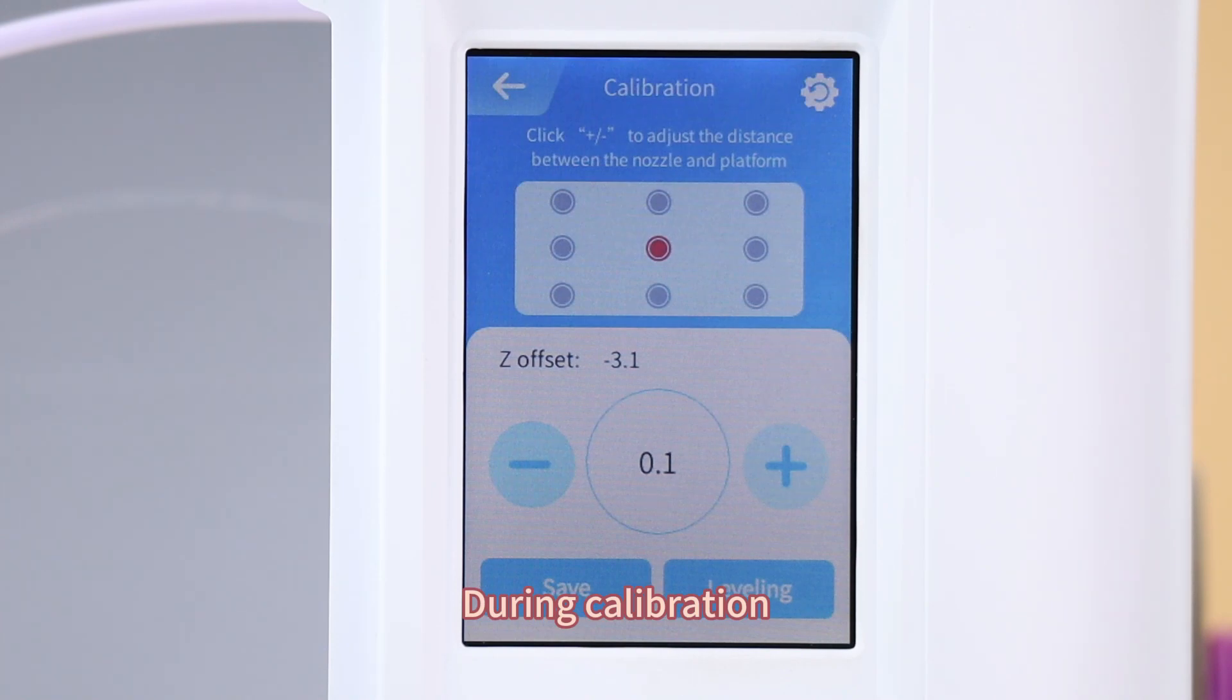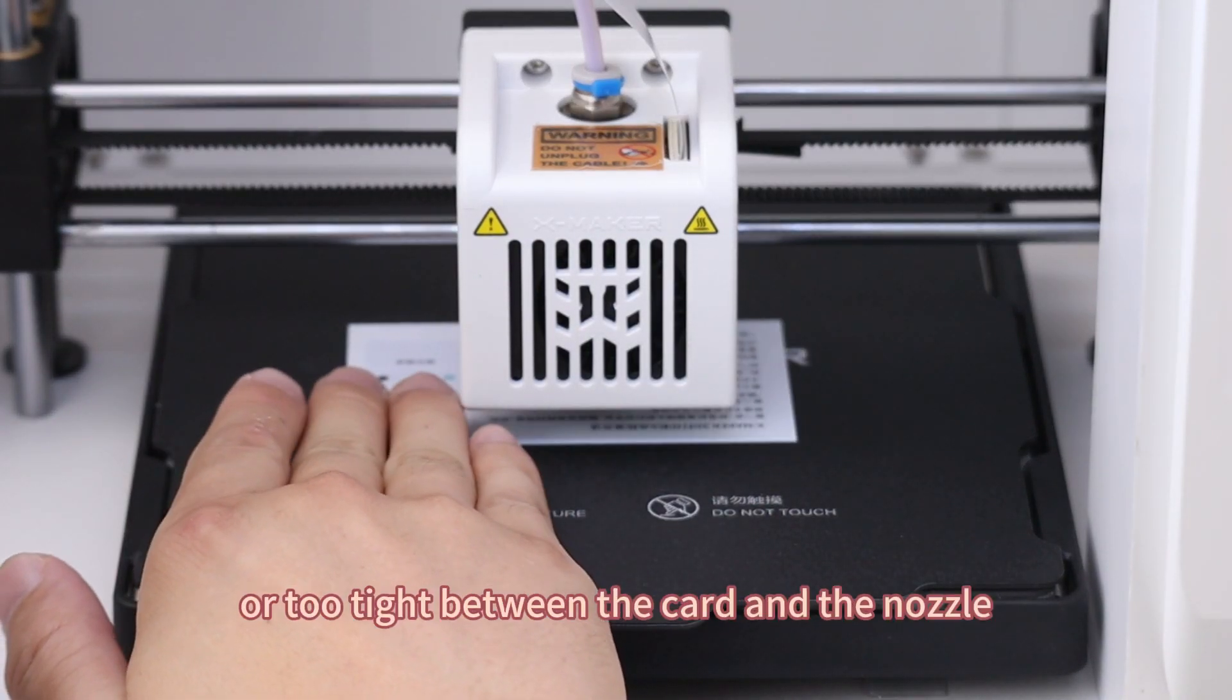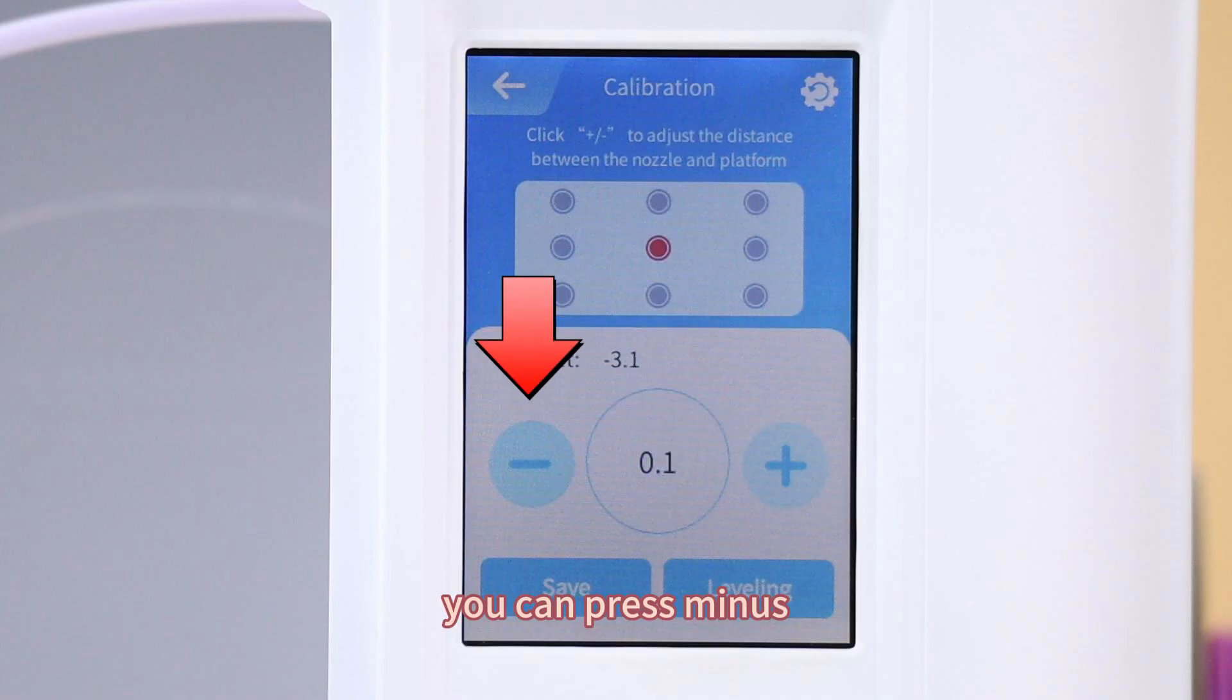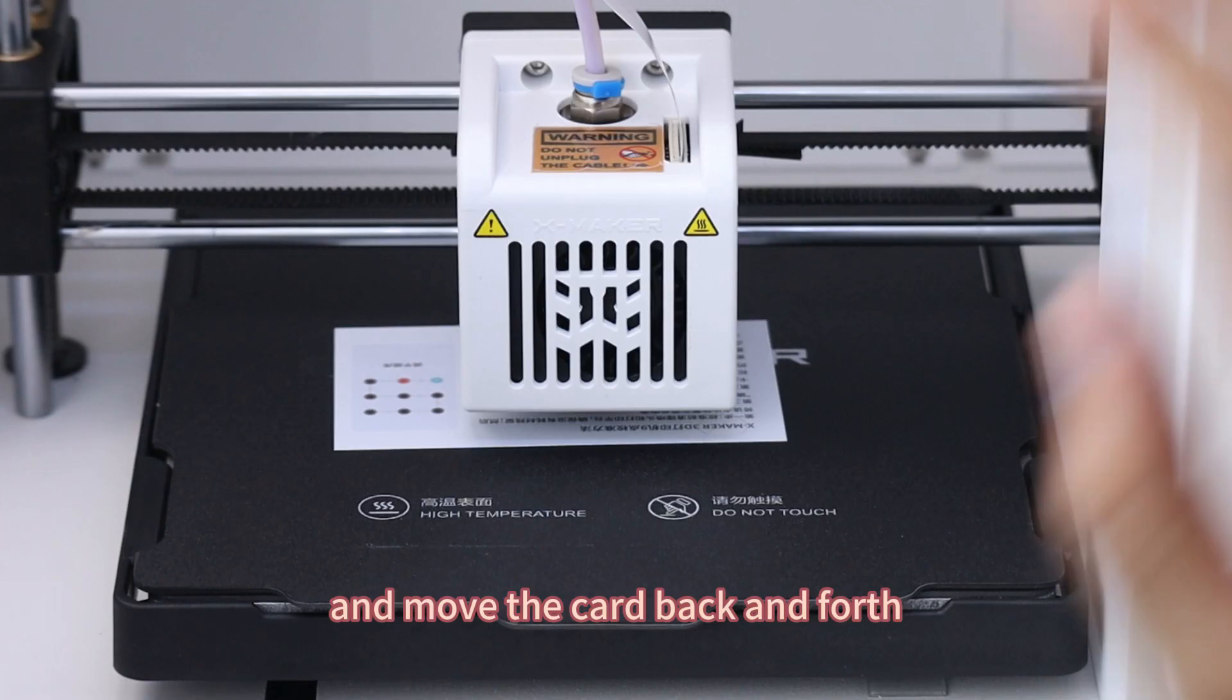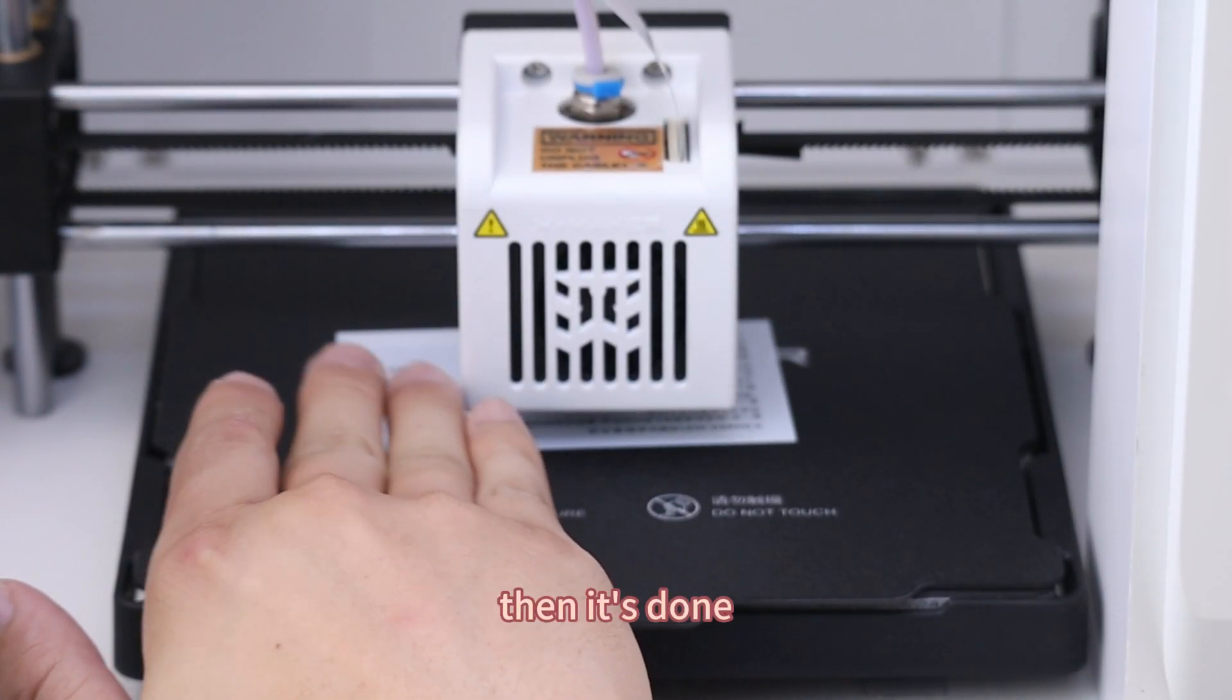During calibration, ensure that it is not too loose or too tight between the card and the nozzle. If it feels too loose, you can press minus and move the card back and forth. If you feel some resistance, then it's done.